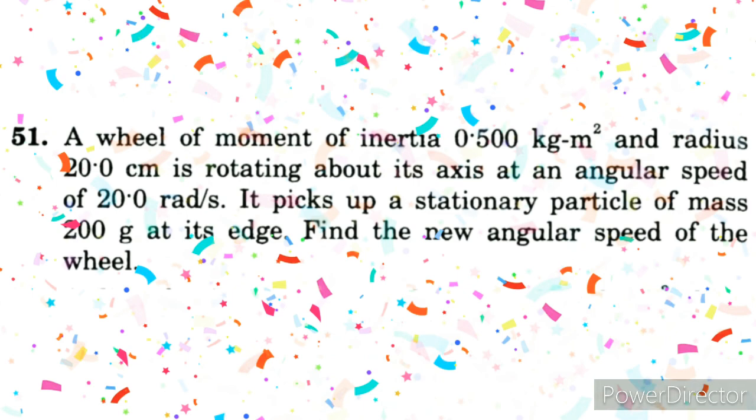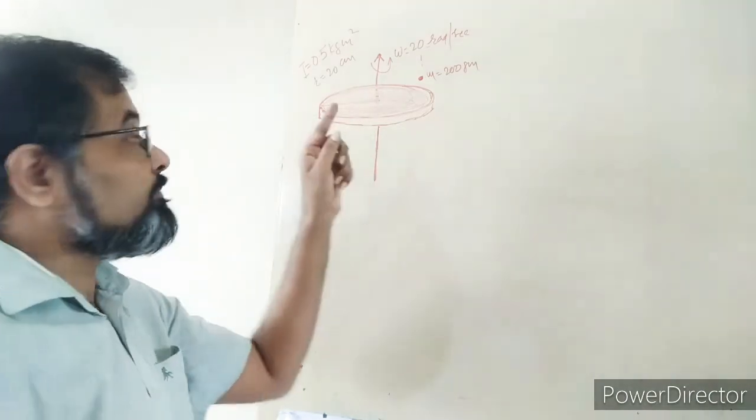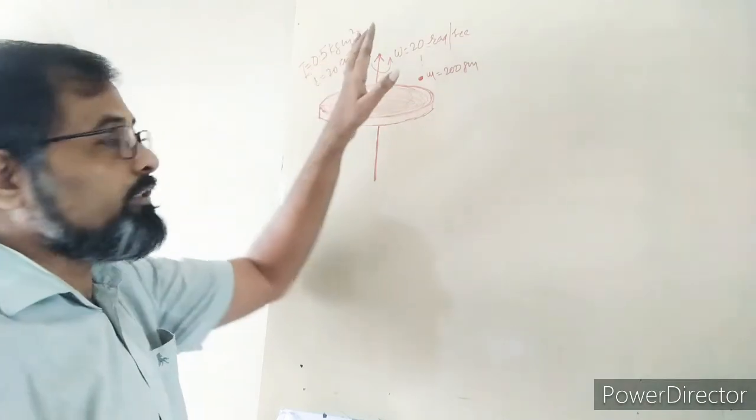It picks up a stationary particle of mass 200 gram at its edge. Find the new angular speed of the wheel. So this wheel is rotating about its axis passing through center and its moment of inertia is 0.5 kg meter square.